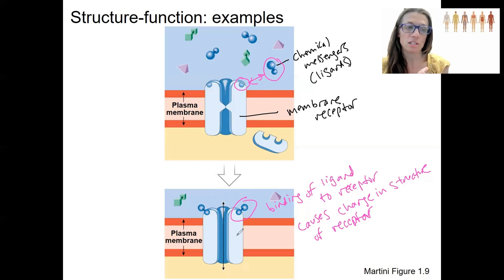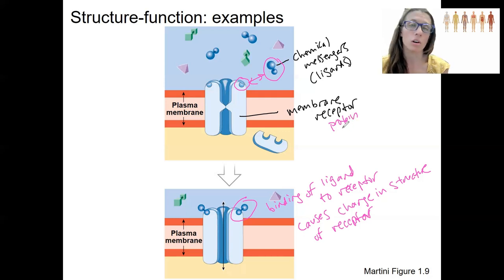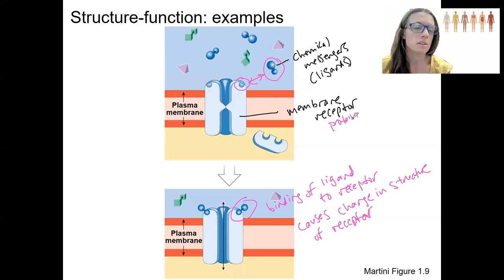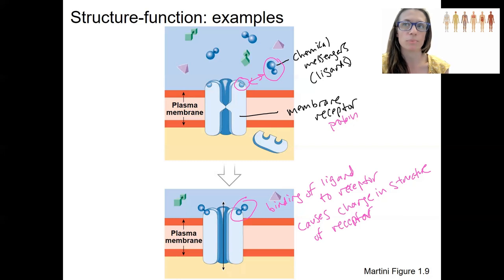The change in this protein — a membrane receptor is a protein — means the shape and structure of the protein determines its function. When it changes shape, it goes from open to closed, on to off, doing one thing versus another. We'll see that a lot: a change in protein structure determines a change in protein function.